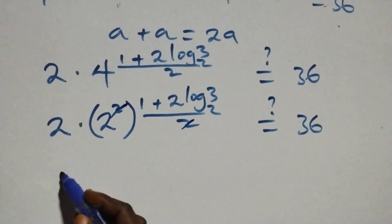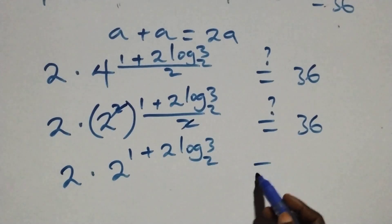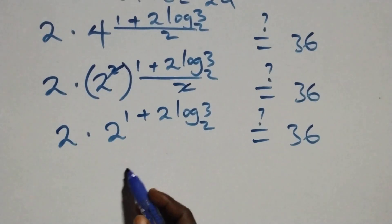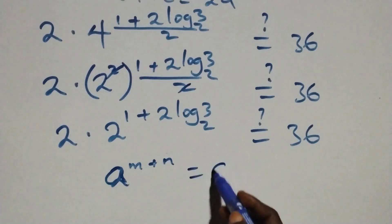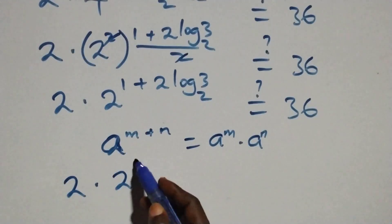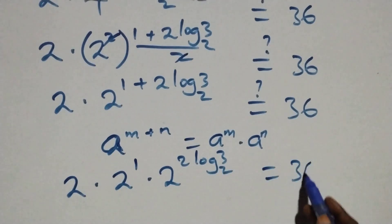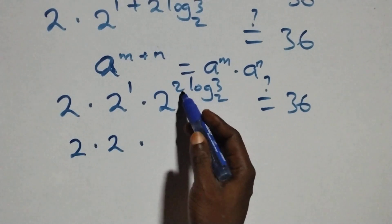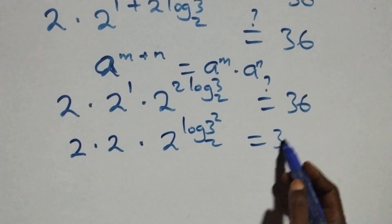So we have 2 times 2 raised to power (1 + 2·log₂3)/2 equals 36. Applying the indices law — a raised to power (n + n) equals a^n times a^n — we have 2 times 2 raised to power 1 times 2 raised to power 2·log₂3 equals 36. Simplifying, 2 times 2 raised to power 1 gives us 4, and we have 4 times 2 raised to power log₂(3²) equals 36.